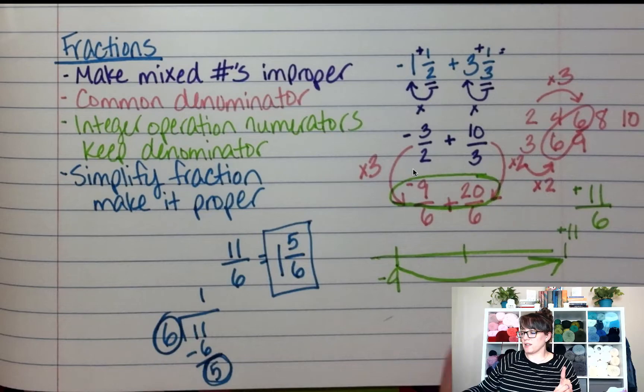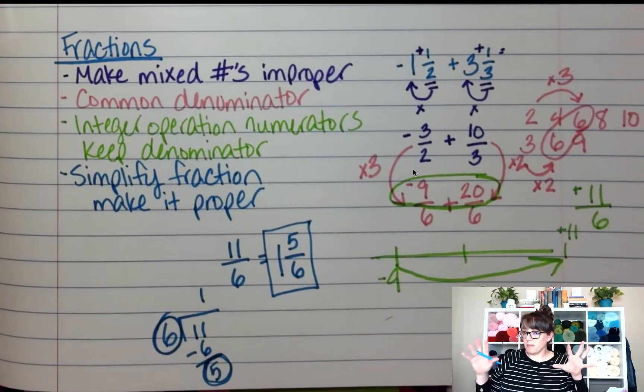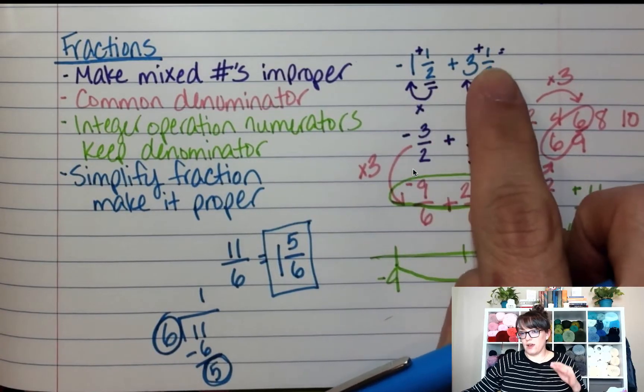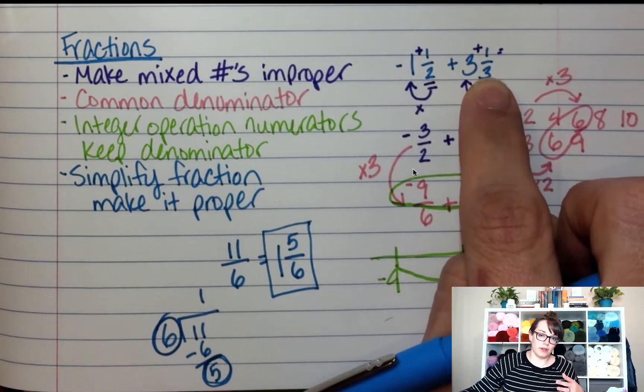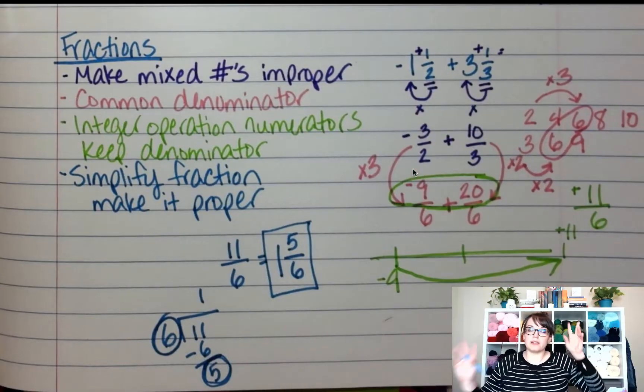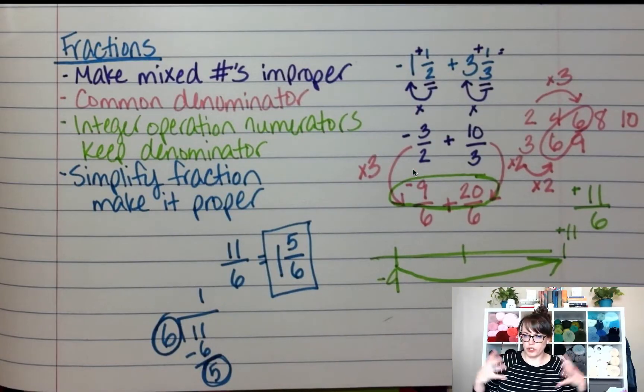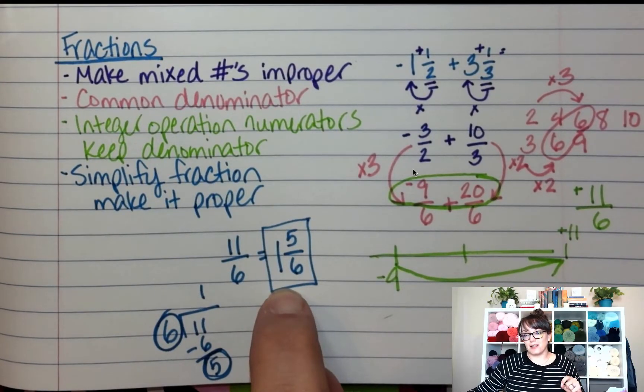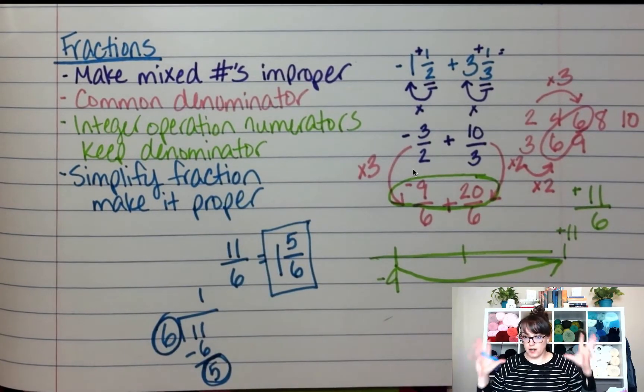I always like to go back and make sure I got my signs right. Did the bigger number keep its sign? Negative one and a half, and positive three and a third. Which one of those is bigger and has more to it? The positive number does. So my answer here is going to be positive. Because the bigger number wins.